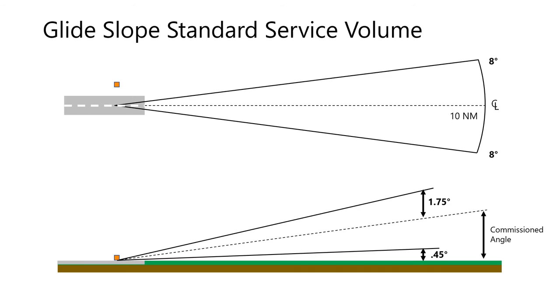In the vertical plane, the glide slope must provide guidance information down to 0.45 degrees above ground and 1.75 degrees above the commissioned angle.